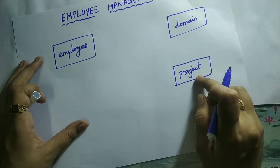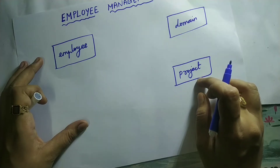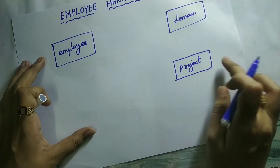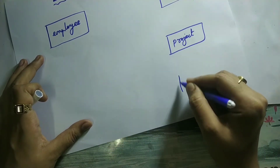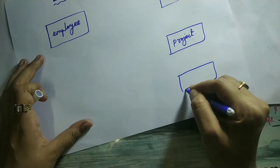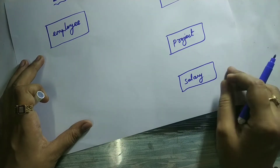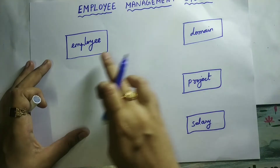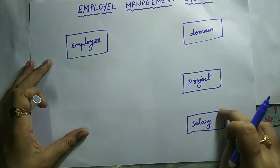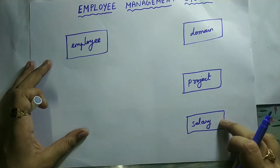Next is project. Project is also not physically existing; it is conceptually existing, but still it is an entity. Next is salary. Salary is also conceptually existing and not physically existing. So these are all the four entities: employee, domain, project, and salary.